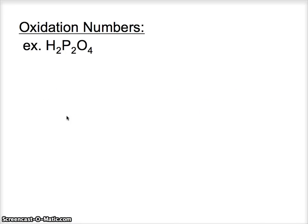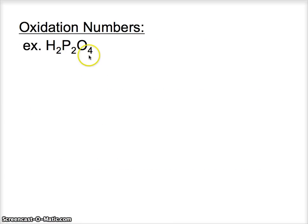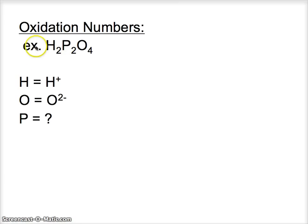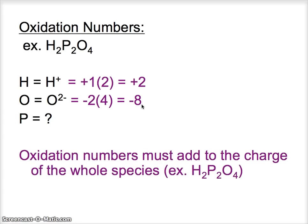How do we know which one becomes oxidized and which one becomes reduced? A useful tool for this is oxidation numbers, which will come in handy when we start balancing redox reactions later in the unit. Oxidation numbers are essentially fictitious numbers that we apply to elements in order to figure out if something is going to become oxidized or reduced. What you do is treat each element like it's an ion. For example, if we have H2P2O4, we treat each element like an ion. Hydrogen has a plus one charge and oxygen has a minus two charge, so the oxidation numbers are plus one for hydrogen and minus two for oxygen. Since we have two hydrogens, we multiply by two, and four oxygens, we multiply by four.